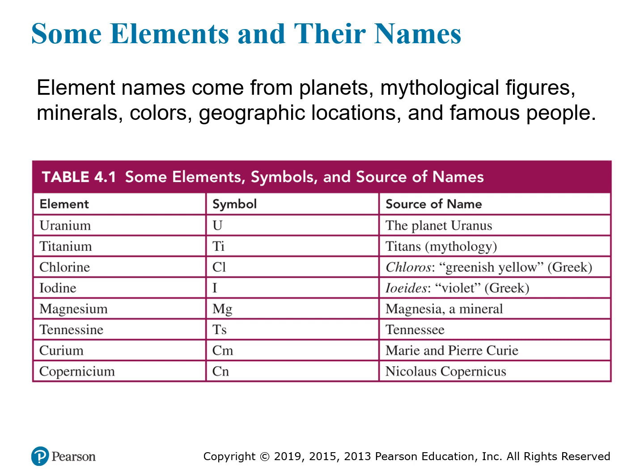So here we see a table with some elements and their names, and you can see that the names are taken from all sorts of different sources. Some of them come from the names of planets, some of them from mythological figures, from colors, geographic locations, the name of the person who discovered them, or other famous people, generally scientists for the most part.